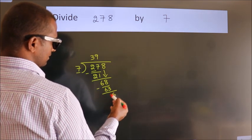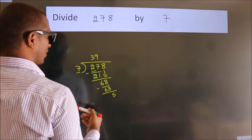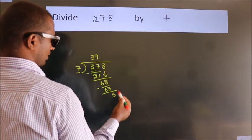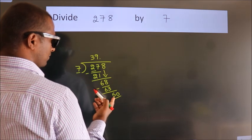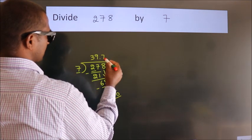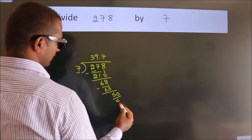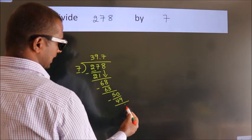After this, no more numbers to bring down. So what we do is, we put dot, take 0. So 50. A number close to 50 in the 7 table is 7 sevens, 49. Now we subtract. We get 1.